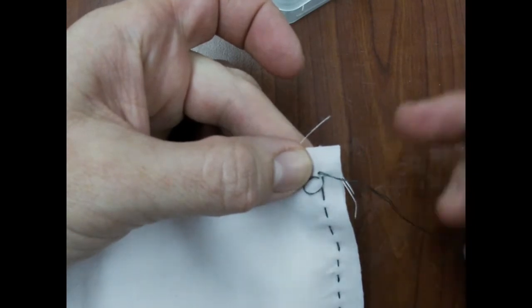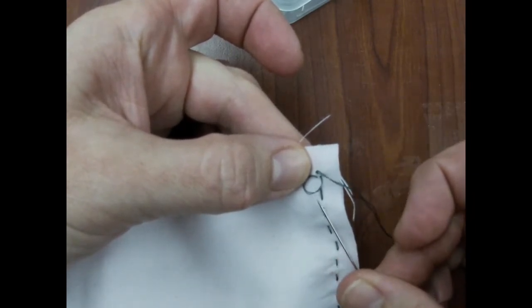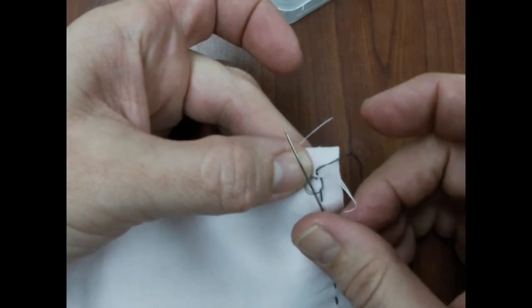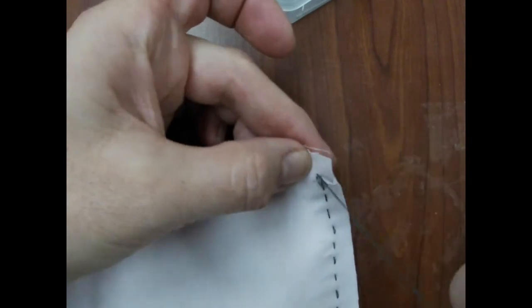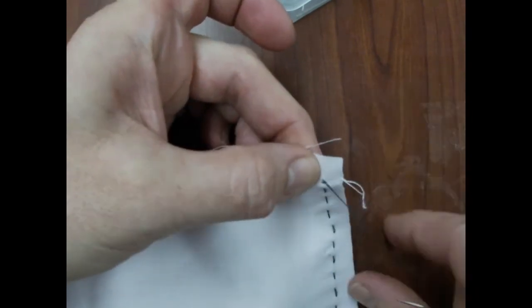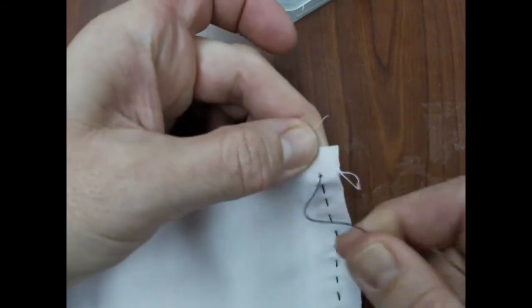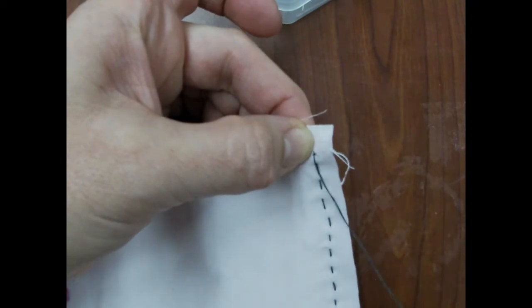Then to tie the knot, you want to come up from underneath that loop. Coming through this way, will tie a nice solid knot. Pull it nice and tight. And I always do two knots just to make sure that it's extra sturdy and will not unravel.